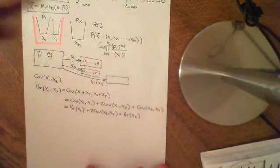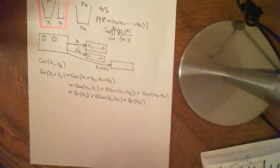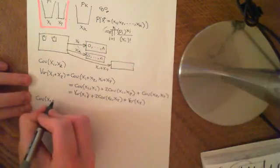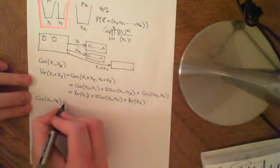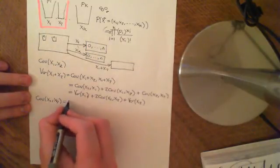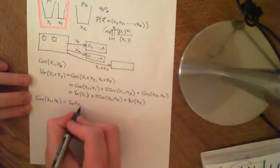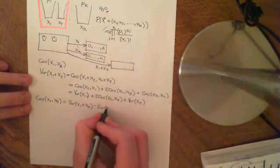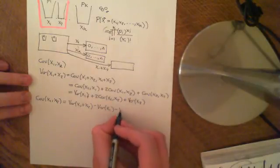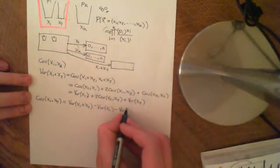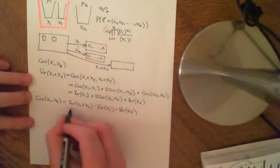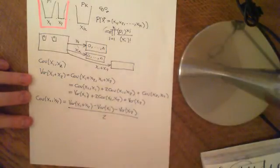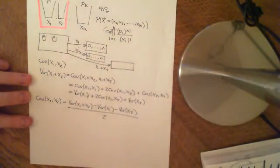This is actually very easy now, because the covariance of x1 and x2 is just equal to the variance of (x1+x2), minus the variance of x1, minus the variance of x2, all divided by 2. Just take those two off to the other side and divide by 2 to get the covariance.